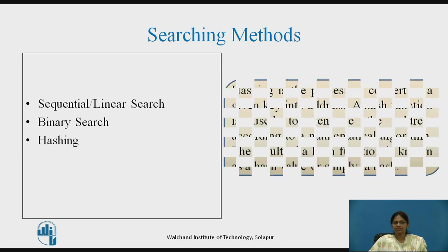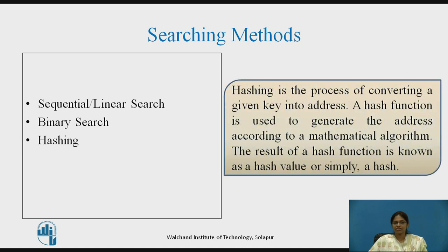Hashing: Hashing is a process of converting a given key into an address. A hash function is used to generate the address according to a mathematical algorithm. The result of a hash function is known as a hash value or simply a hash.